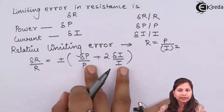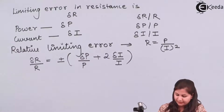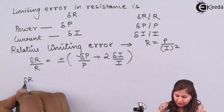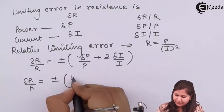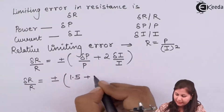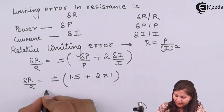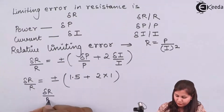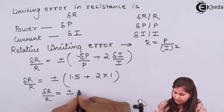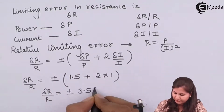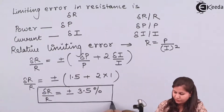We now put in the given values to calculate the relative limiting error in resistance. δP/P is given as 1.5% and δI/I is given as 1%. So δR/R = ± (1.5 + 2×1) = ± 3.5%. This 3.5% is the limiting error in the measurement of resistance.